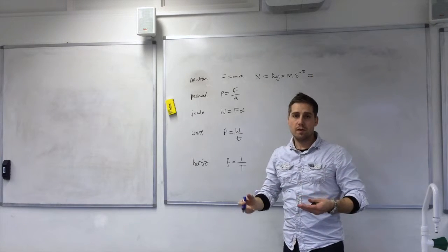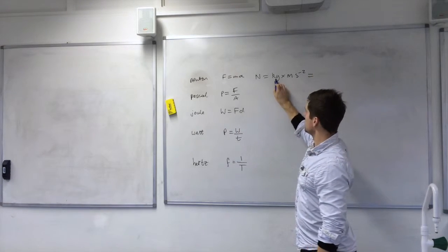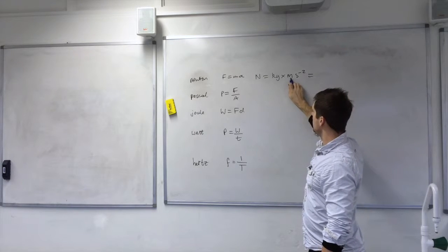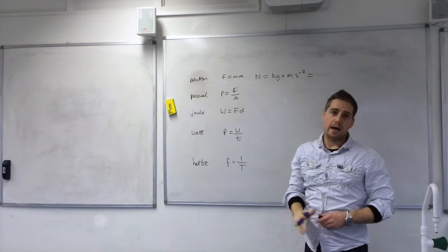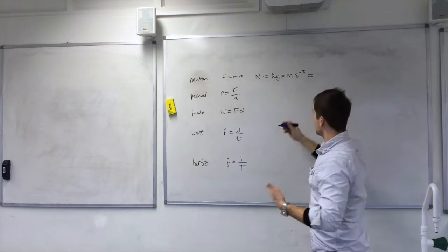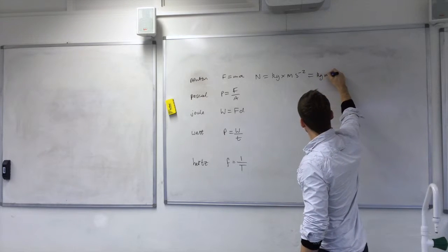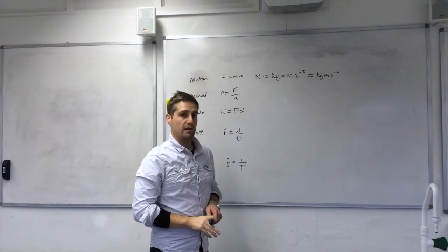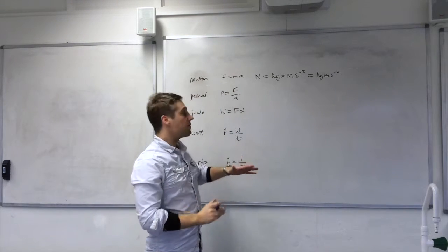We can't simplify that any further, they are already in base units. Kilogram is the base unit for mass in the SI system, m is the base unit for length and s is the base unit for time. So kilogram metres per second squared is already in base units for us. That's very straightforward.